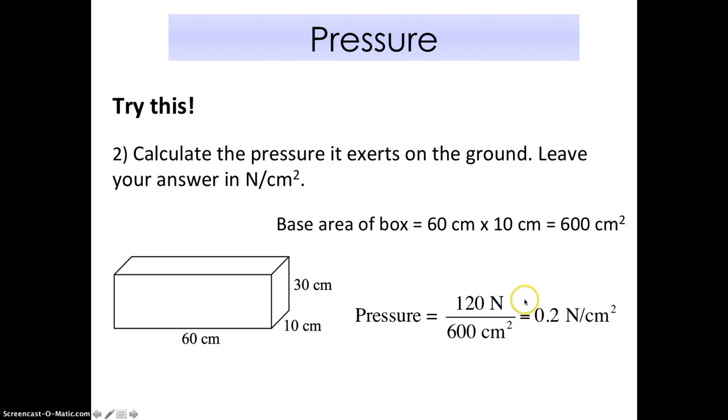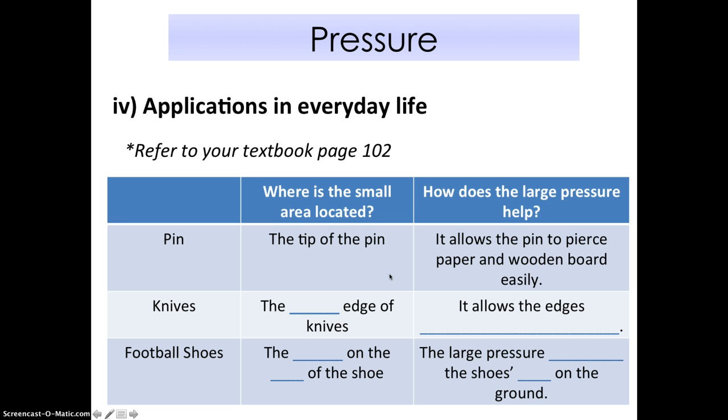You probably are able to do this now, so look forward to doing a few more of these questions in class when you come back to school. The last part of this pressure notes, we need to go through the application. What do we use it for? How do we use it every day? You can refer to your textbook page 102 if you want to find out more, but this is the summary. Let's look at the normal pin, the pin that you use maybe for your notice board or for your clothes. Usually we like to make the tip very small. Why? Because with a small area, it allows the pressure to become very big. It allows the pin to pierce the paper or wooden board easily.